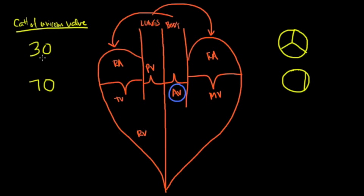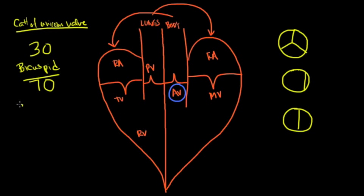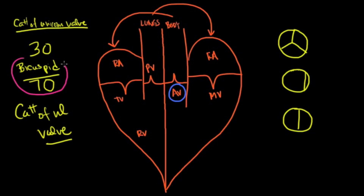The most common cause between ages 30 and 70 is a bicuspid valve. These become calcified very early, and they are the most common cause of aortic stenosis overall, specifically between ages 30 and 70. After age 70, you simply get calcification of a normal valve. But overall, if asked the most common cause of aortic stenosis, it would be bicuspid before the age of 70.